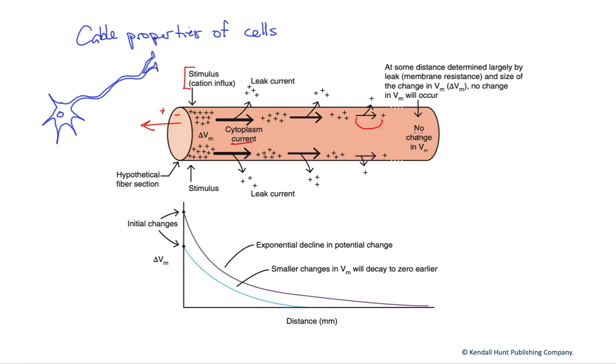At some point down the cell, we're going to have no change in the membrane potential VM. And that's because we will sort of dissipated this change in membrane potential due to the leak. And we call that voltage decay over distance. That's what's shown graphically down here.